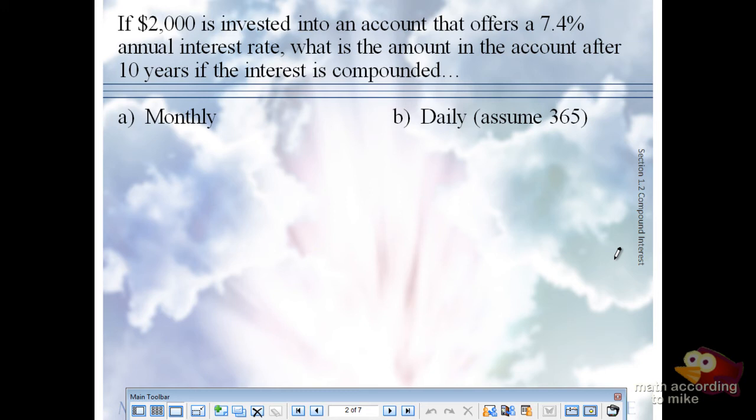So let's set up Part A. We'll say A is equal to 2,000, that's our P, times the quantity 1 plus, what's our R for this problem? 0.074. And if we're doing monthly, what's our N? 12. Raised to the 12 times, what's our T? 10.